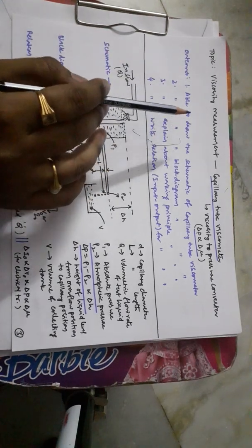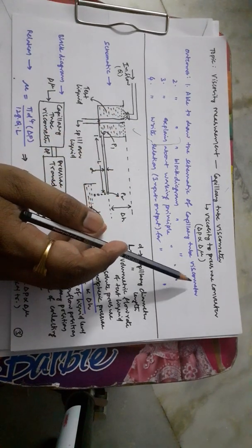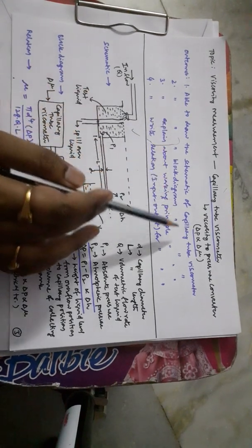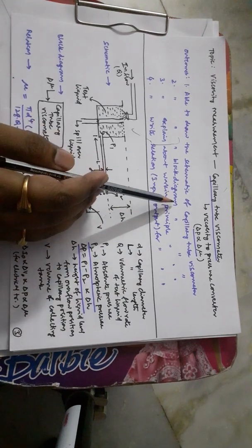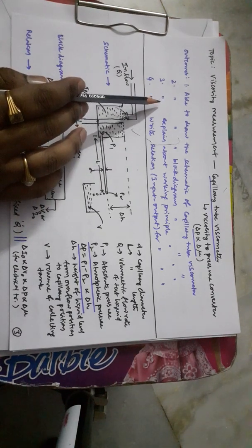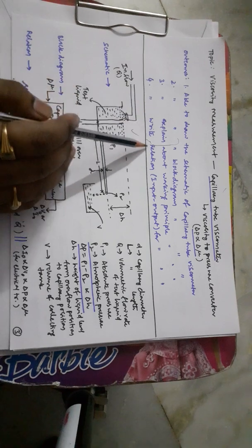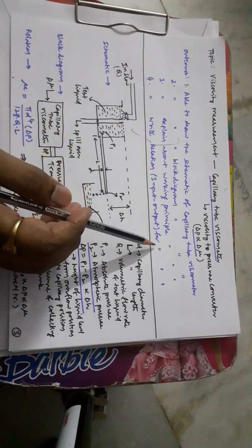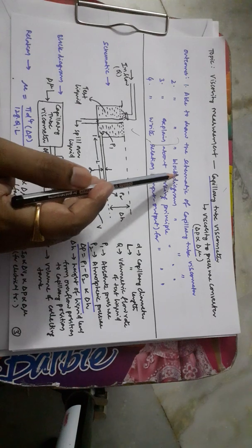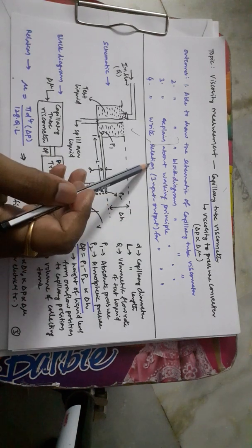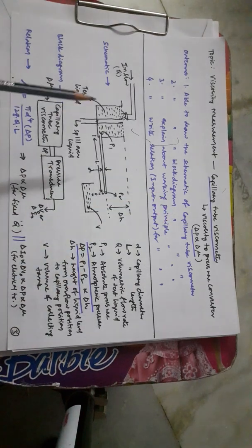There are four learning outcomes for this topic. Students will be able to: draw the schematic of the capillary tube viscometer and mention its elements; draw the block diagram and mention variables before and after each block; explain the working principle; and write the input-output relation. Schematic drawing, block diagram, and relations fall under the remember level, while explaining the working principle is at the understand level.